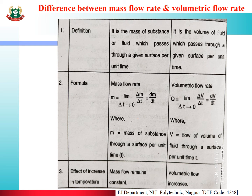The third parameter is the effect of increase in temperature. In mass flow rate, when we increase the temperature, the mass flow remains constant. But in volumetric flow rate, if we increase the temperature, the volumetric flow increases. This is the difference between mass flow rate and volumetric flow rate.